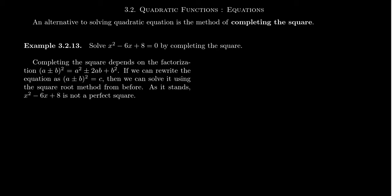Consider the quadratic equation illustrated here on the screen: x squared minus 6x plus 8 equals 0. This is the so-called standard form of a quadratic equation. It looks like ax squared plus bx plus c equals 0 — that is, the right-hand side looks like 0. That's what we want in this type of situation.